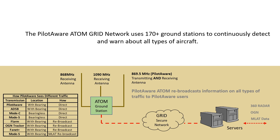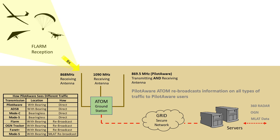The ATOM grid station provides as much integration between systems as possible. This is done by collecting all forms of electronic conspicuity and relaying them to all in-range PilotAware units. The first antenna receives all transmissions from FLARM, OGN trackers and FAN net equipped aircraft — directly and at close to the speed of light with no perceivable latency.